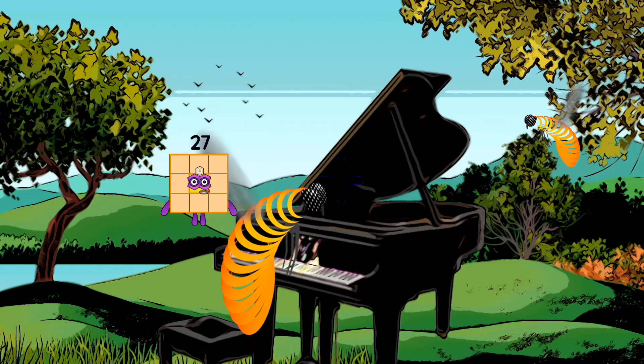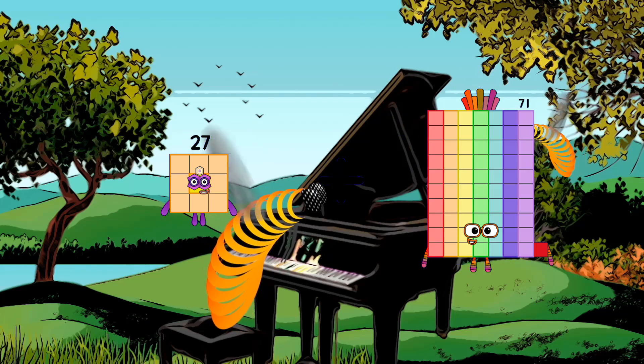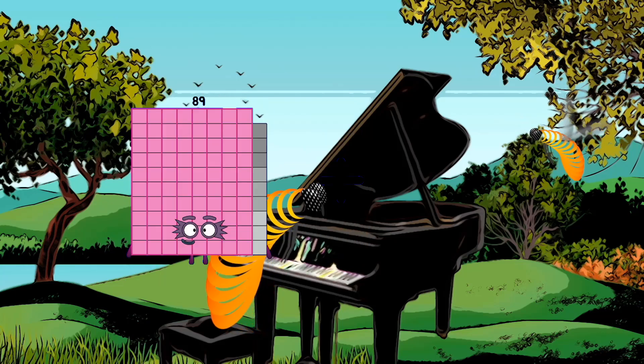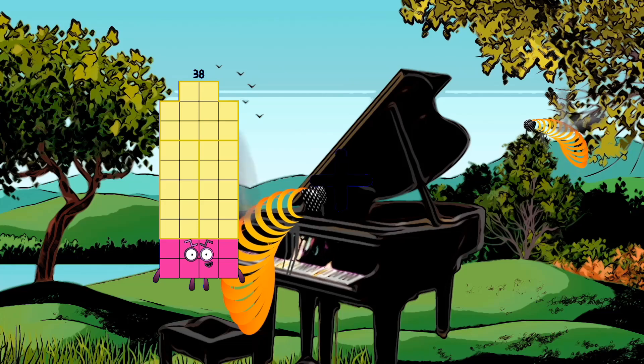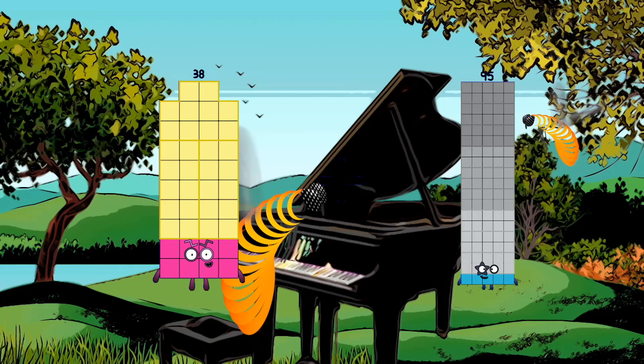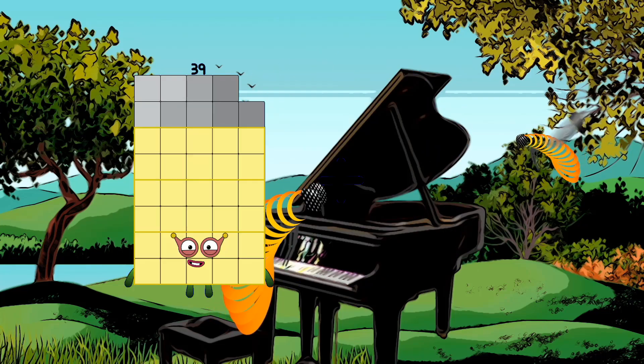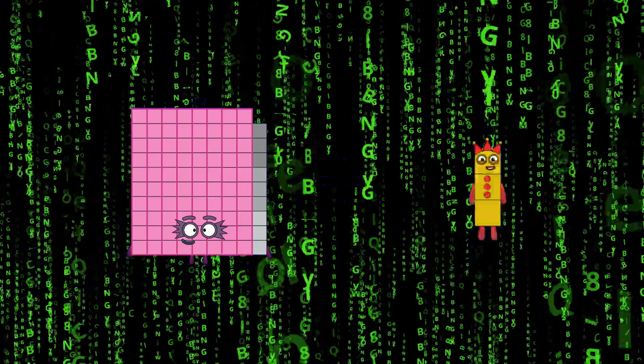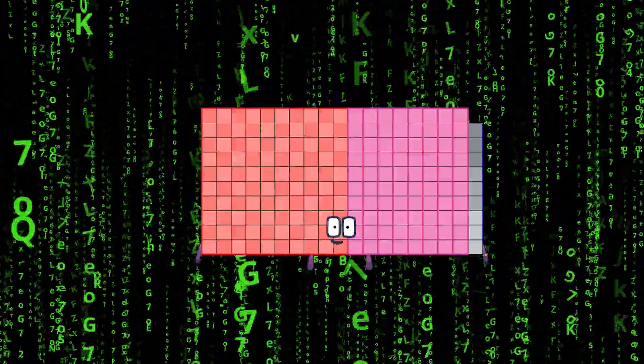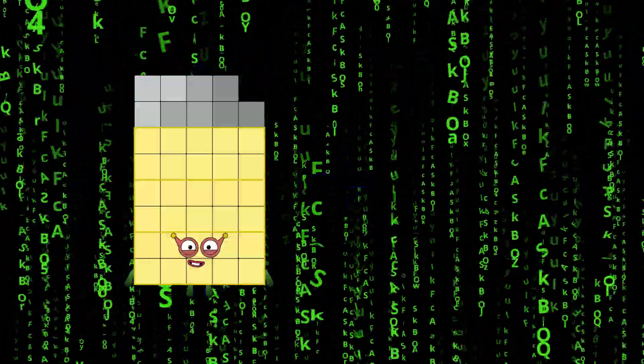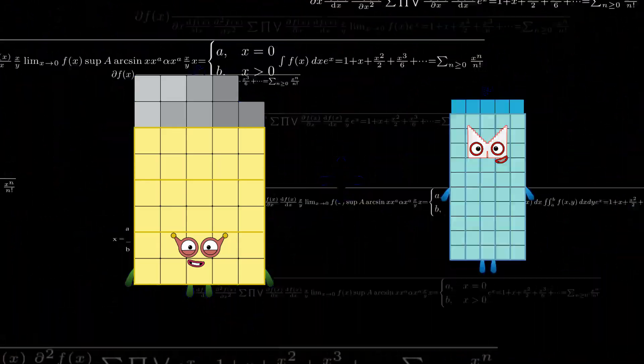27 plus 25 equals 52. 38 plus 95 equals 133. 89 plus 100 equals 189. 39 plus 33 equals 72.